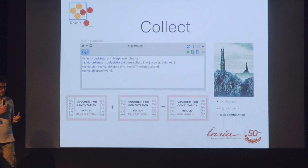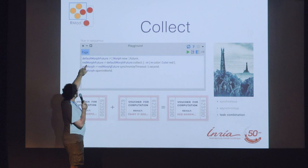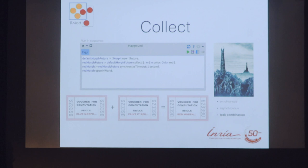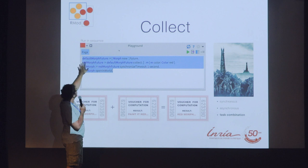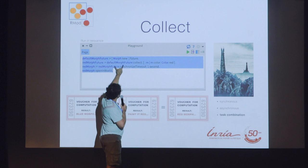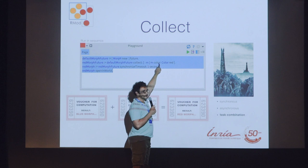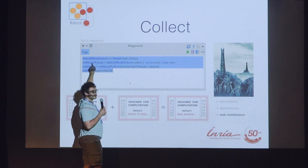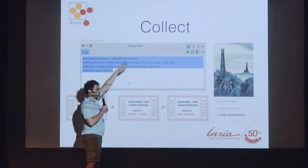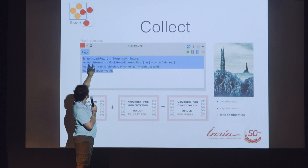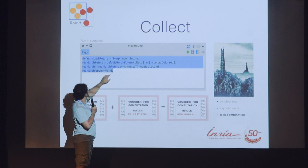For example, we have a default morph which is blue. We have a future that is going to represent this default morph. Then we say: after, I would like to collect it with this other task that takes the morph and paints it red. When we do so we receive a new future representing the result of those two tasks aligned sequentially — first one executes, then the next. We end up with a red morph future, and we can ask it to open in the world. The name collect is chosen because it's the same idea as map in the collection API — you give something to the collection and it gives you back a transformation.